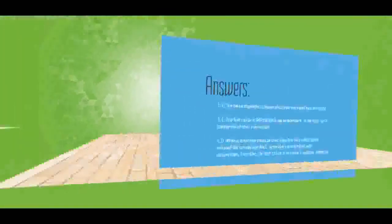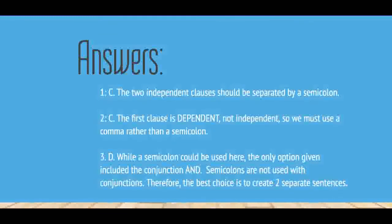Time's up. Here are your answers. Number one was C — those two independent clauses should have been separated by a semicolon. Number two is also C — the first clause was dependent, not independent, so we had to use a comma rather than a semicolon. Semicolons can only separate independent clauses. And number three is D — while we could use a semicolon to combine the two sentences, the only option that included a semicolon also included the conjunction AND. Semicolons are not used with conjunctions, so the best choice is to create two separate sentences, ending the first with a period and starting the second with a capital letter.